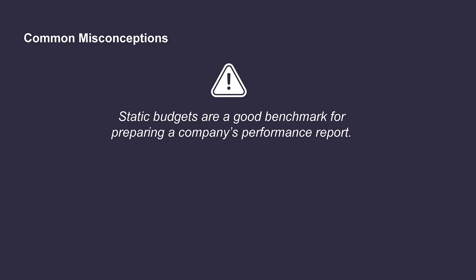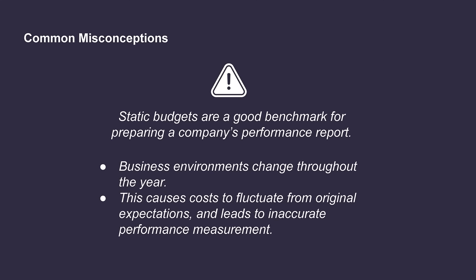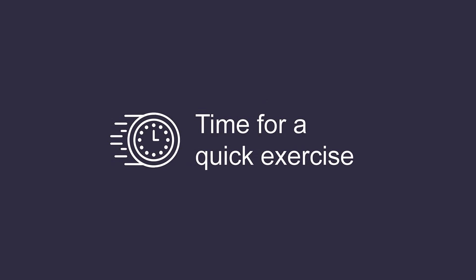It's a common misconception that static budgets are a good benchmark for preparing a company's performance report. While this may be true when a company's output is very similar to what they originally planned, in reality this is usually not the case. It's very common for business environments to change throughout the year, resulting in a company's output fluctuating significantly from their original expectations. When this happens, their costs typically vary substantially from their original static budget. As a result, comparing the planned costs for one level of output to their actual costs at another level of output doesn't provide the business with good information to accurately measure performance.